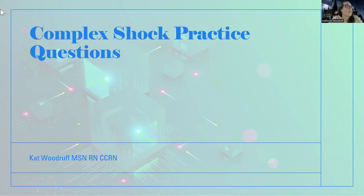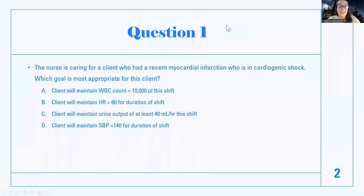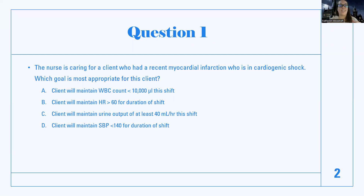So let's dig in. Shock — great topic, scary topic, shocking topic. There are three types of shock you're going to need to know: cardiogenic shock, hypovolemic shock, and septic shock for this section. You'll learn about neurogenic shock later. There's a variety of ways that questions can be asked, so let's start with the first question.